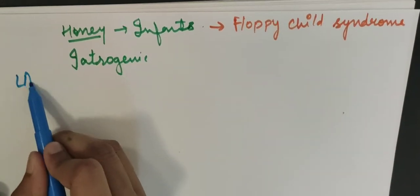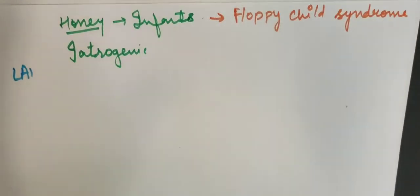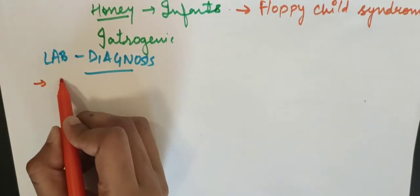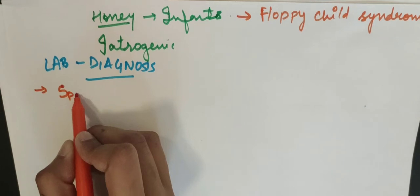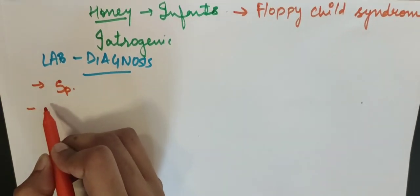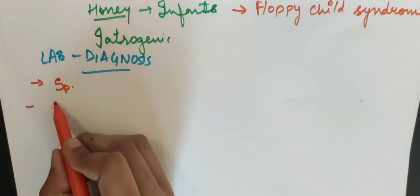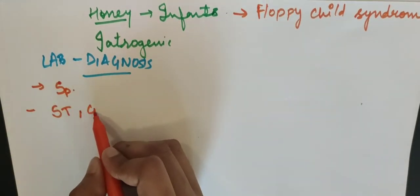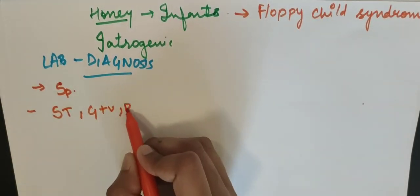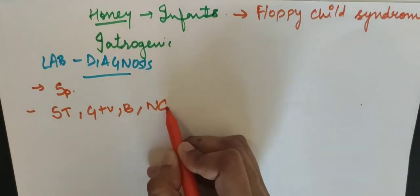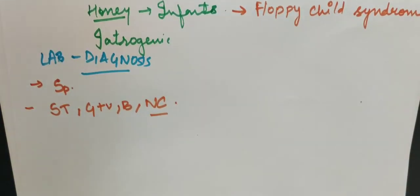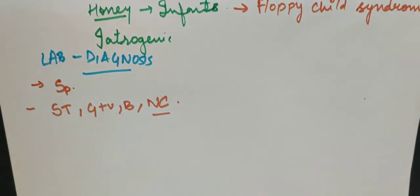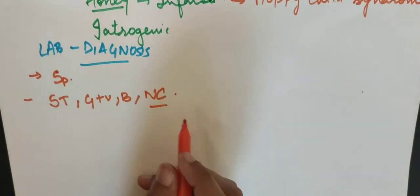So next, let's do lab diagnosis. First of all, what will we do? We collect the smear, isolate it, then we will see it. It is sub-terminal. It is spores. It is gram-positive, it is bacilli, and it is non-capsulated. What did we do in capsulated? Clostridium perfringens - we have found that it is capsulated. The rest of it is non-capsulated.